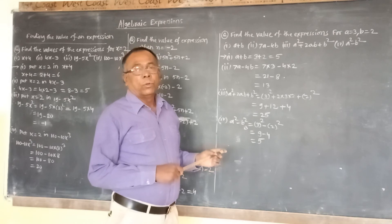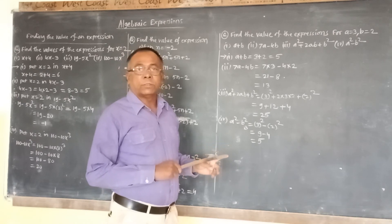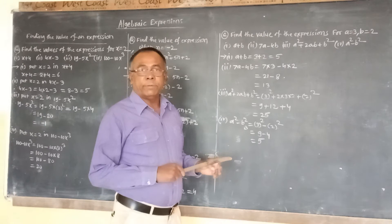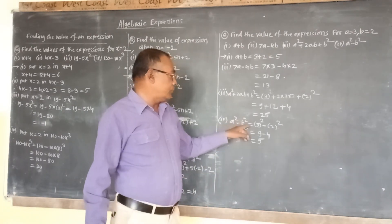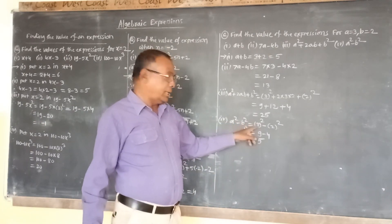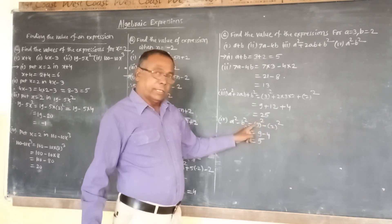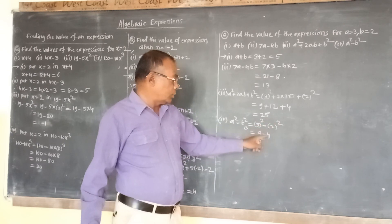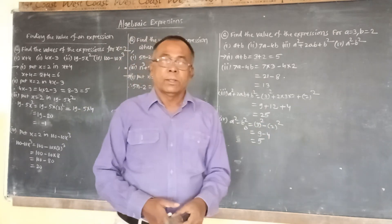Three squared is 9, 2 into 3 into 2 is 12, and 2 squared is 4. So 9 plus 12 plus 4 equals 25. The value of the third expression is 25. For the fourth expression, a squared minus b squared with a equal to 3 and b equal to 2, we get 3 squared minus 2 squared, which is 9 minus 4, equaling 5.